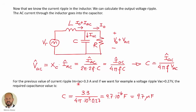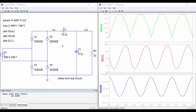For example, for our case in which the AC component of the current is 3.3 amperes peak value, and if we want an output voltage ripple of 0.27 volts, then substituting we get a capacitance value of 9.7 microfarads. Here we have a simple circuit to verify our design.